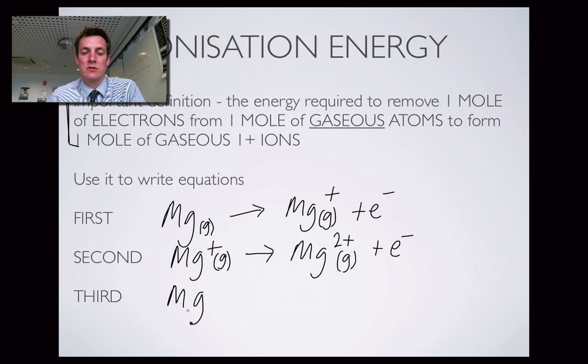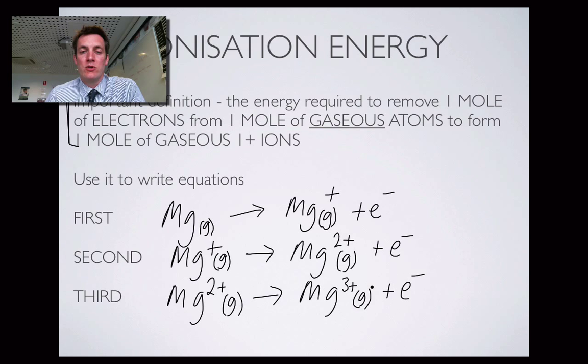To illustrate, the third ionization energy of magnesium: we're now taking a third electron away. We've already taken two away, so we've got a two-plus ion, and we're turning it into Mg3+ which would also be gaseous according to the definition, and an electron is released. So that is what we mean by these three key ideas which we observe trends in the periodic table of.